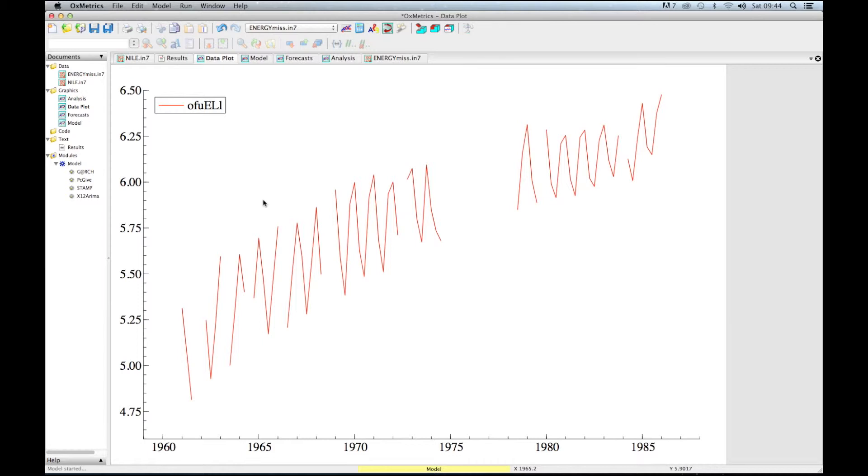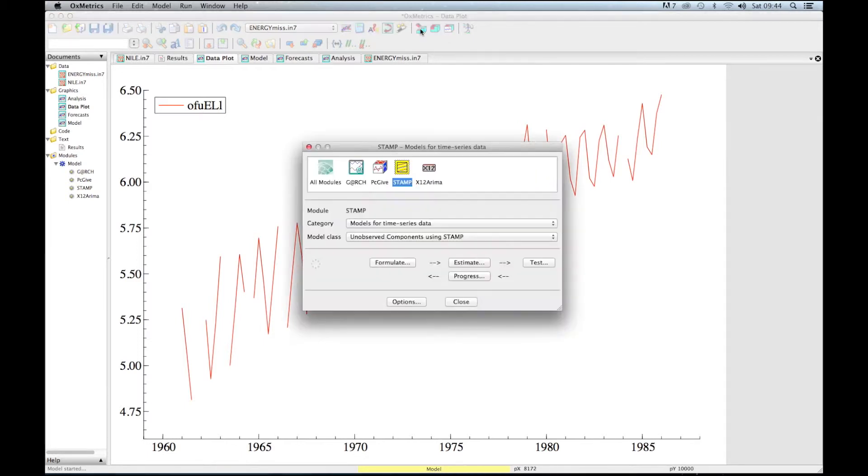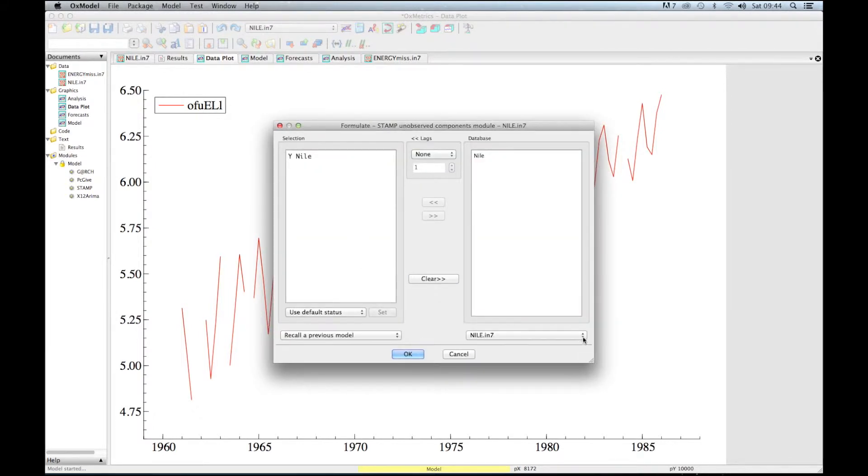So how can we analyze it when we have so much missing data? Well, here in STAMP you basically just do as we did with the Nile data: we select an appropriate time series model by going to Formulate. We have to change the focus from database Nile to Energy Miss, so we are now in the Energy database.